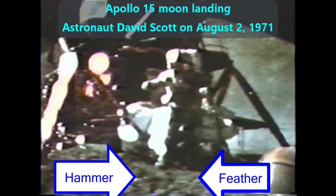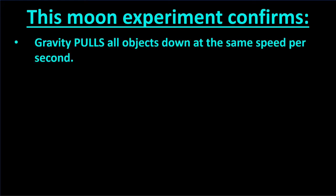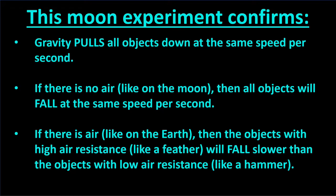How about that? This moon experiment confirms several facts. Gravity pulls all objects down at the same speed per second. If there is no air, like on the moon, then all objects will fall at the same speed per second. If there is air, like on the earth, then objects with high air resistance, like a feather, will fall slower than objects with low air resistance, like a hammer.